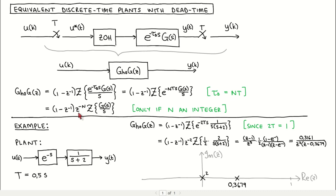If the delay is not an integer multiple of the sampling period then the discretization becomes much more complex. Refer to the textbook for this case.